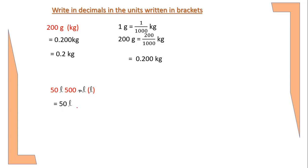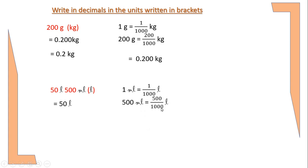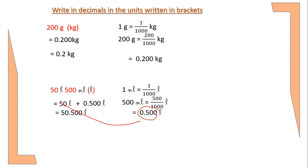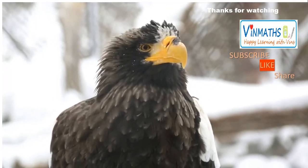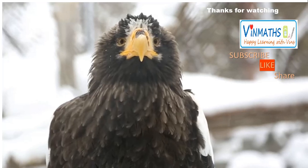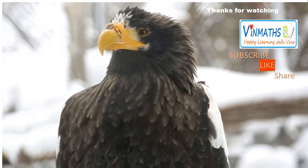I will write the higher unit as it is: 50 liter. Then I will convert the lower unit to the higher unit. Since 1 milliliter equals 1/1000 liter, 500 milliliters equals 500/1000 liter. After converting the fraction 500/1000 to decimal, I get 0.500 liter. Adding this to 50 liter, the final answer is 50.500 liter.